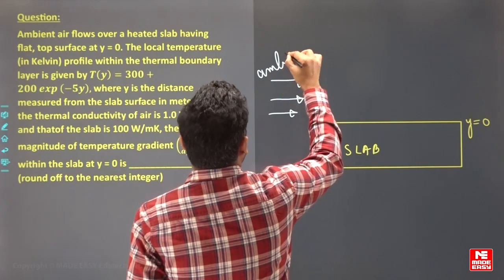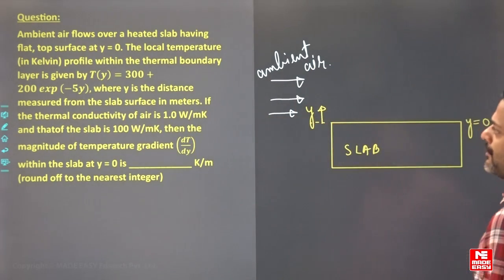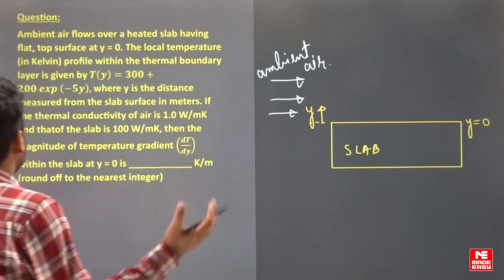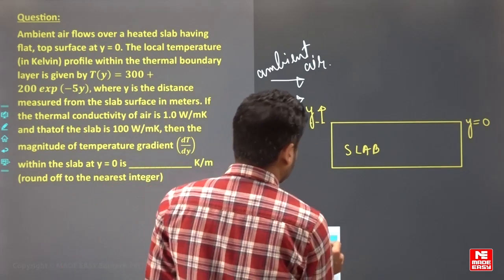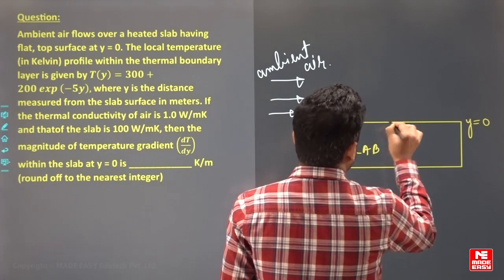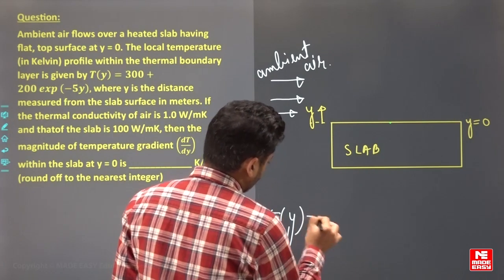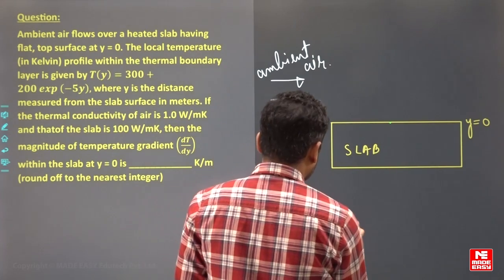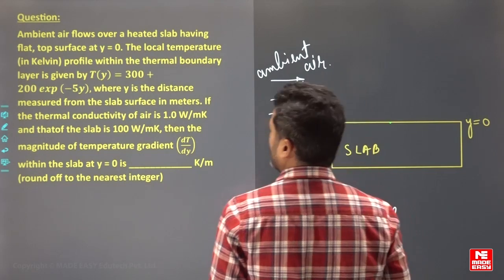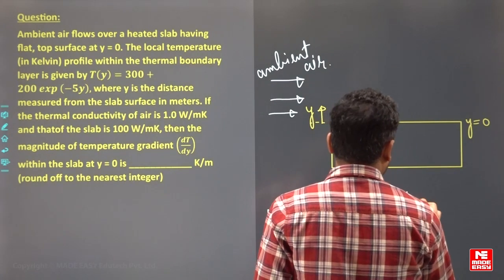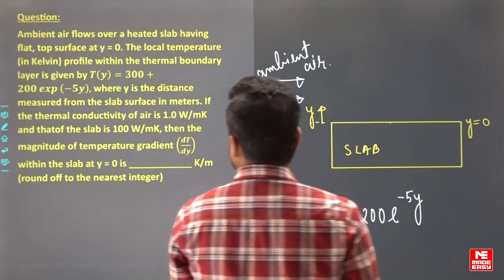Ambient air is flowing on it. The local temperature profile in Kelvin within the thermal boundary layer is given. At one particular location, the temperature profile of the fluid as a function of y is given: T equals 300 plus 200 e to the power of minus 5y.